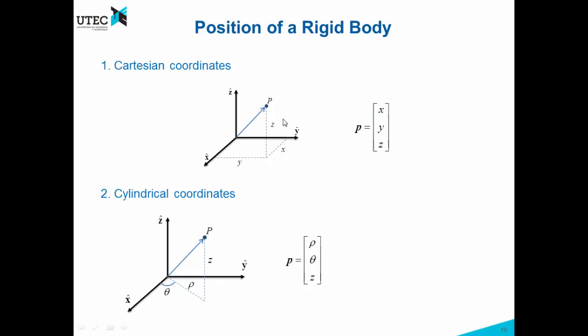We can establish relations between these two coordinates. From a geometric point of view, you can do it by yourself, and we get this. This is a relation from cylindrical coordinates to Cartesian coordinates, and this is from Cartesian coordinates to cylindrical coordinates.